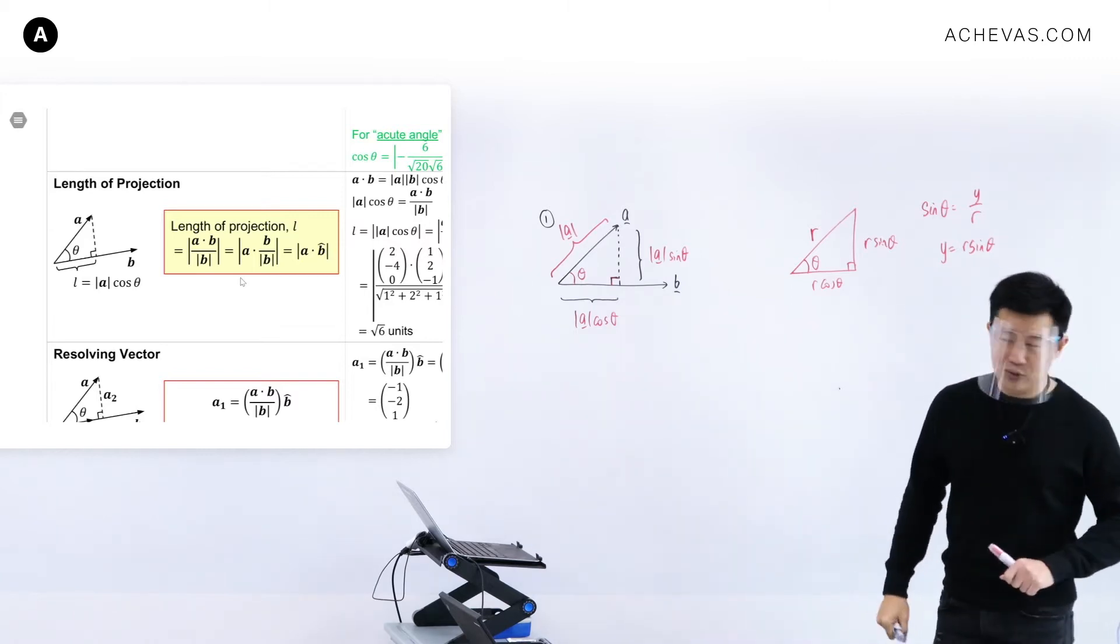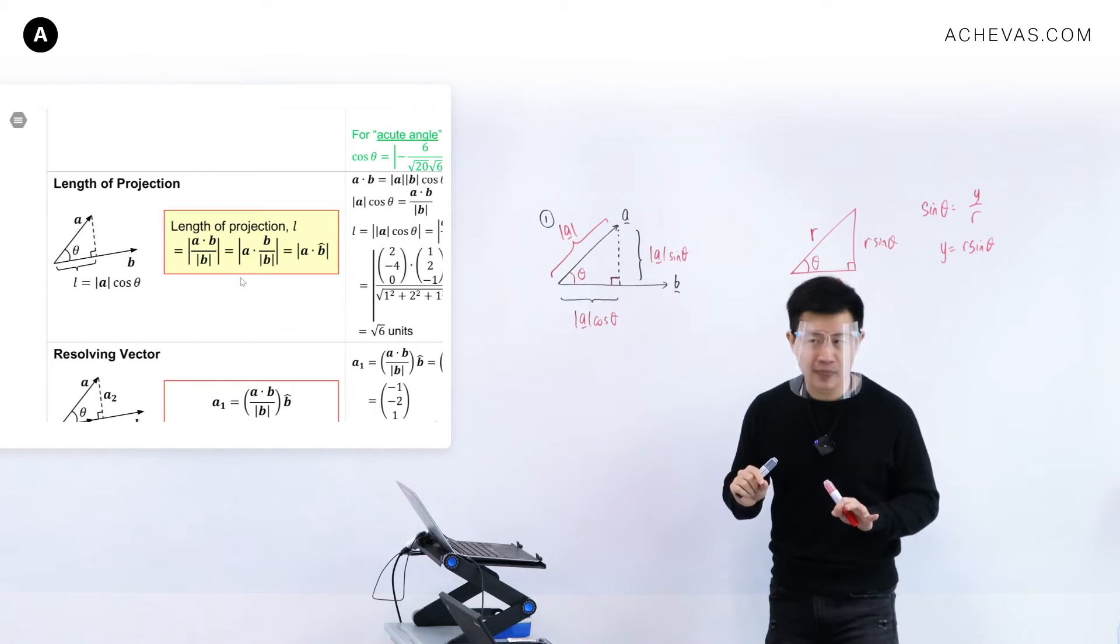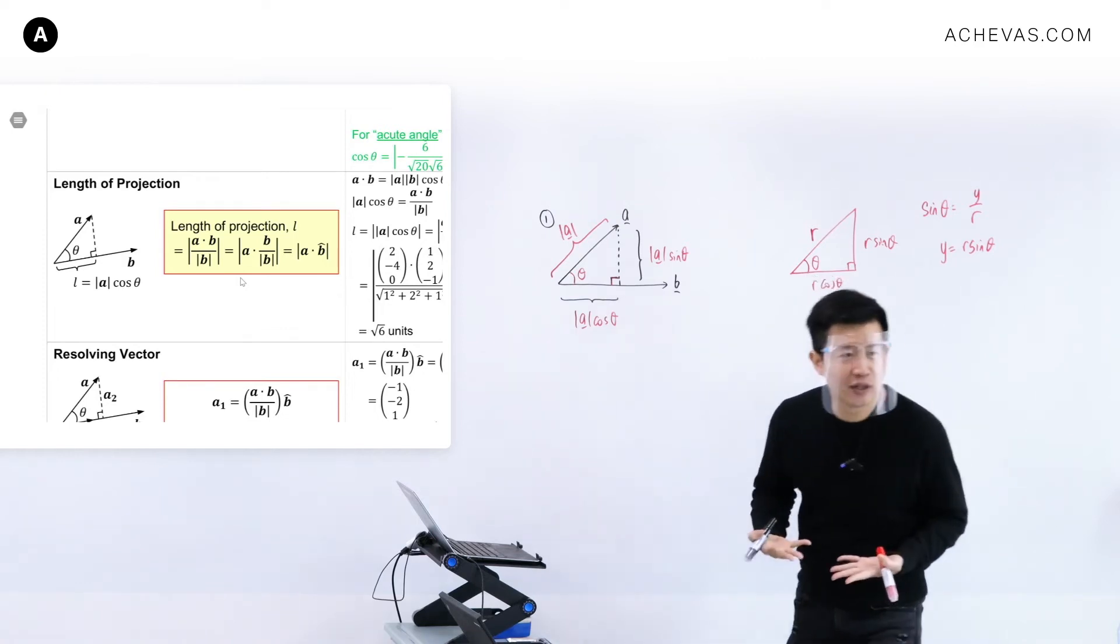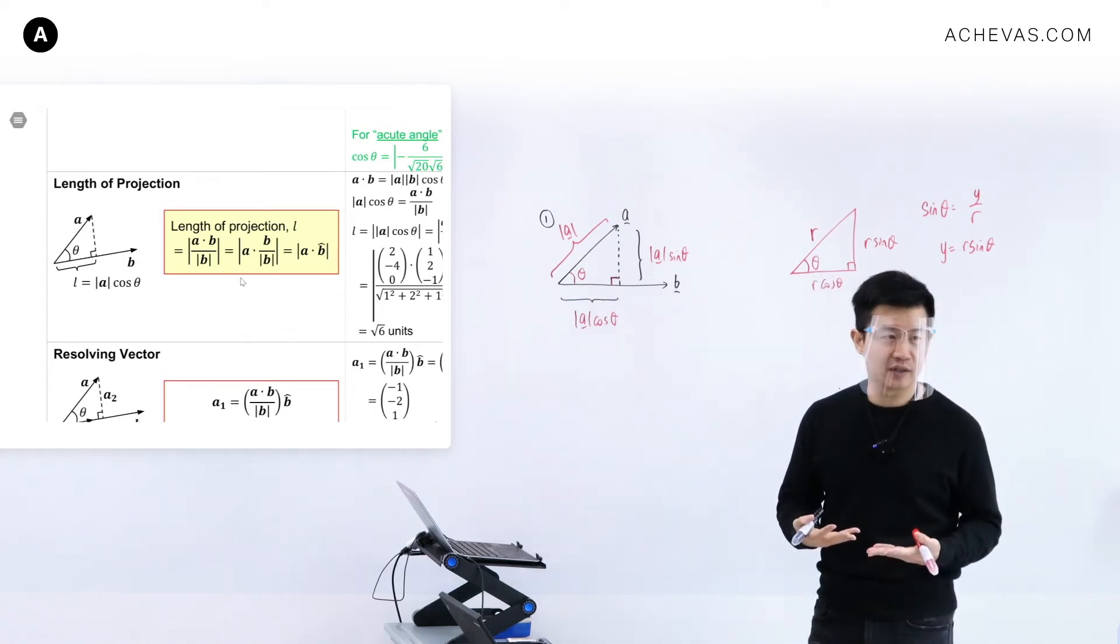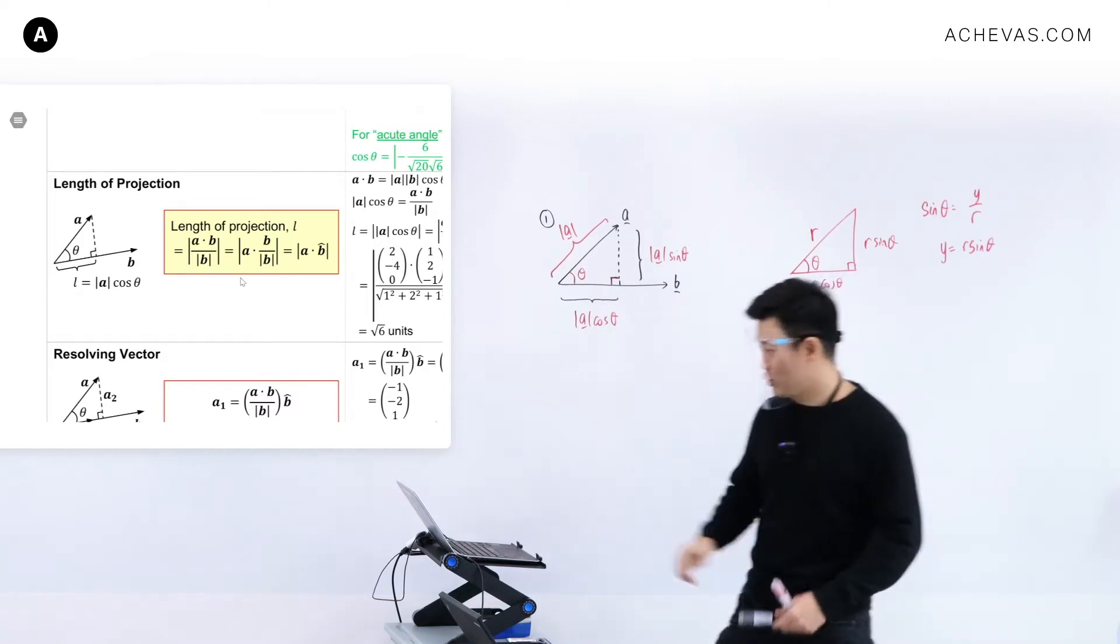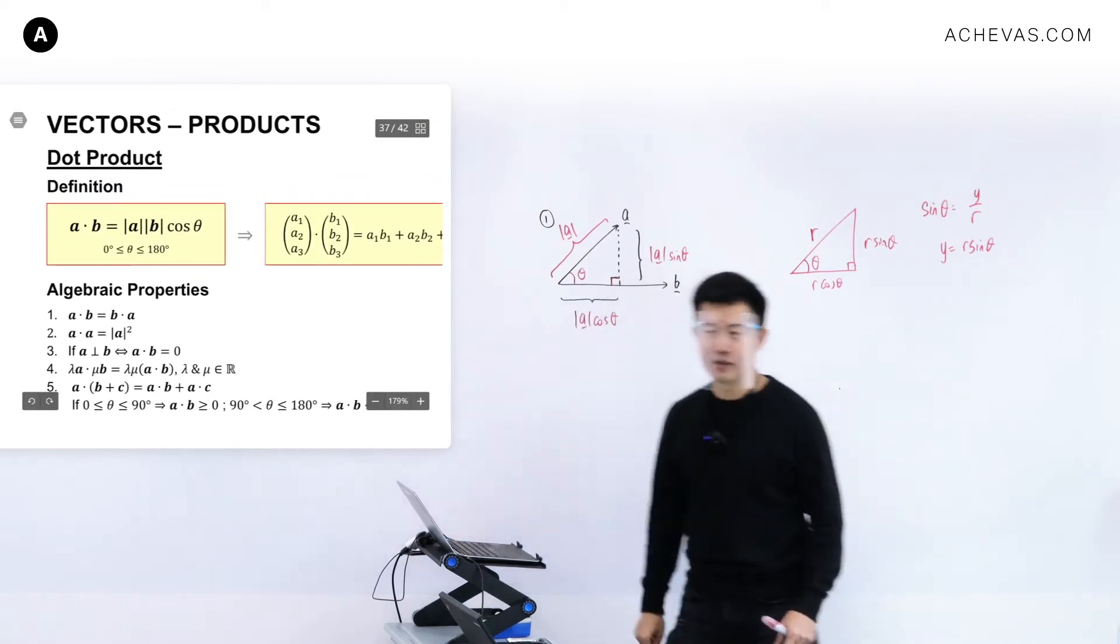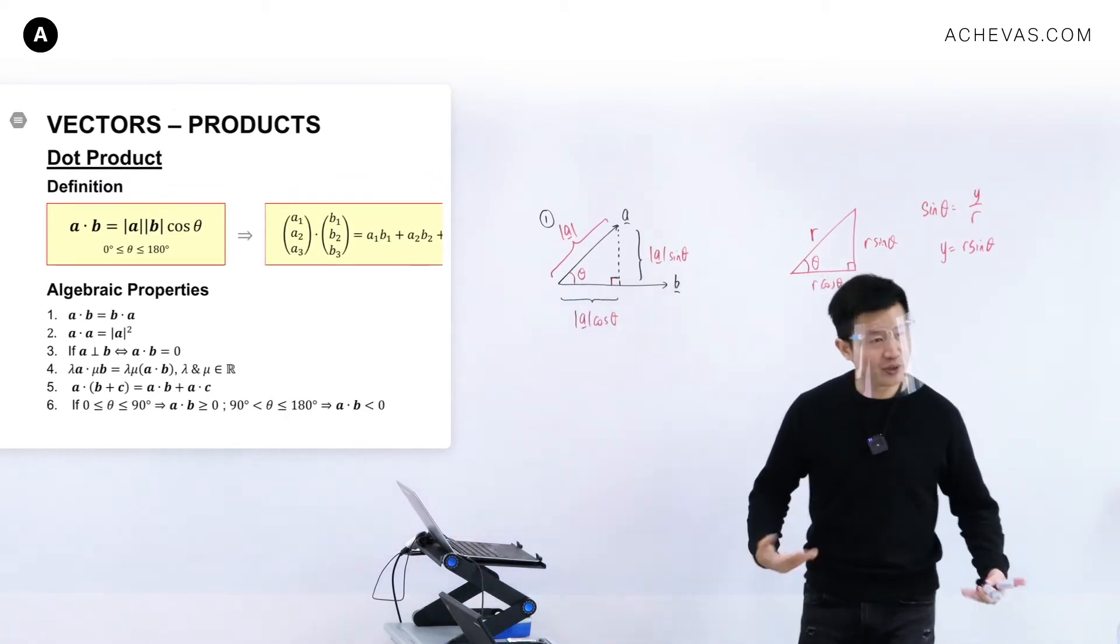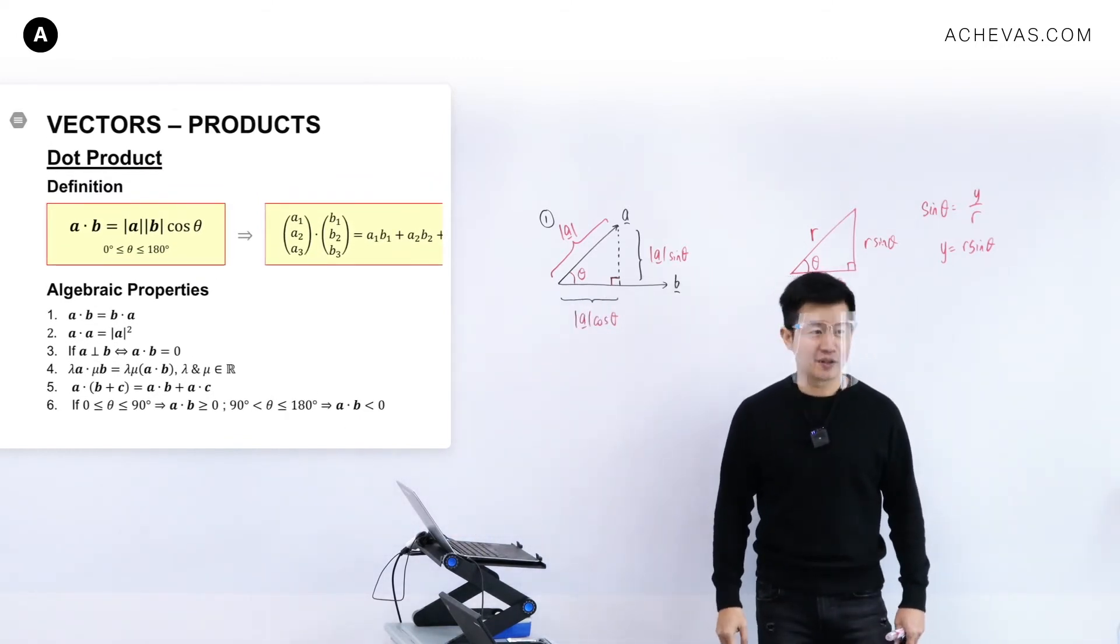Let me ask you now. In vectors, is there a tool that can help me to generate a cosine theta? Yes, there is. We are given a new tool. That new tool is this. The dot product will automatically generate a cosine theta.